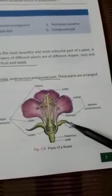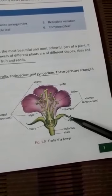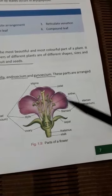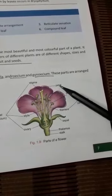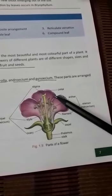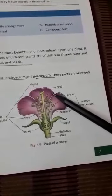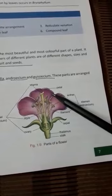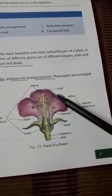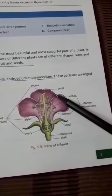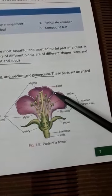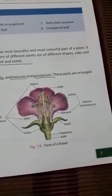Now coming to the second part, that is corolla. It is the second whorl and it is brightly colored. It is made up of petals, and these petals are colorful and scented. The function of petals is to protect the reproductive parts of a flower and to attract bees, butterflies, and various insects which help in pollination.